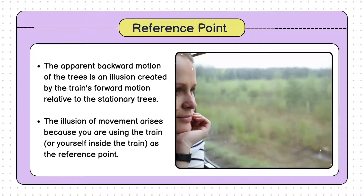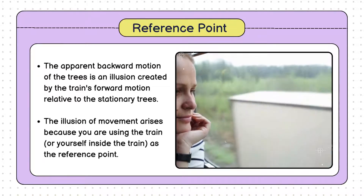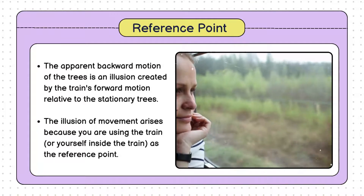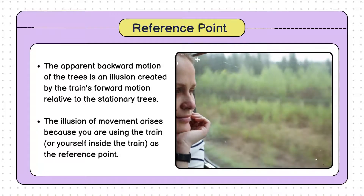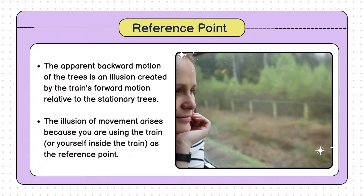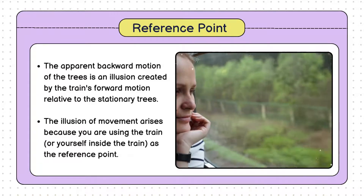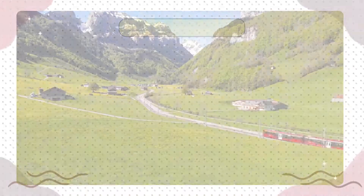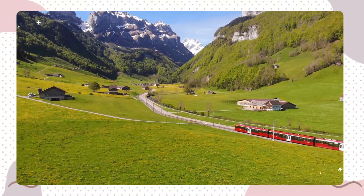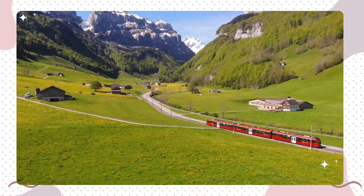As the train moves forward, your position changes relative to the stationary trees, creating the illusion that they are moving backward. In reality, it's the train — and you with it — that's in motion. Next time you're traveling in a train or any moving vehicle, take a moment to observe this phenomenon.